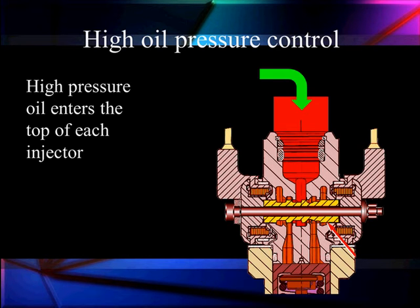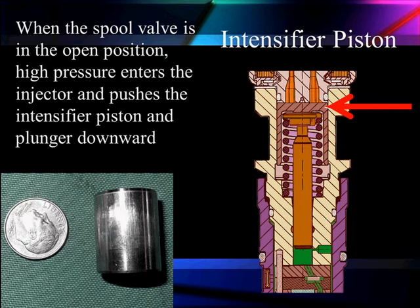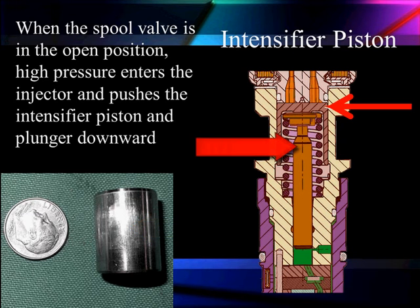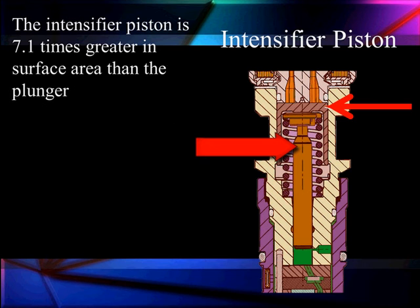We've talked about getting fuel to the injector. Now that we've got the fuel to the injector at the bottom, or in the middle however you want to look at it, we've got to talk about our high-pressure oil. As the high-pressure oil enters the injector and passes by the spool valve, it's going to let the oil apply to this piston. We see pointed out here an arrow — it's connected to a plunger. The plunger is going to be pushed downward. Because the piston has seven times greater area than the plunger internally, we're going to have hydraulic multiplication.